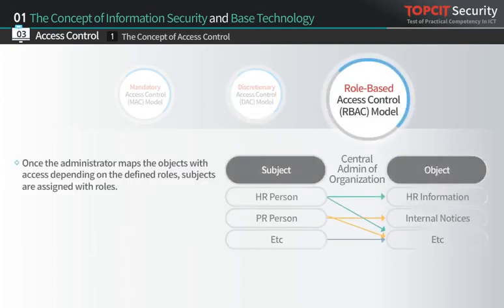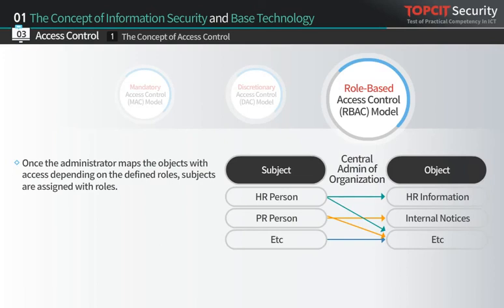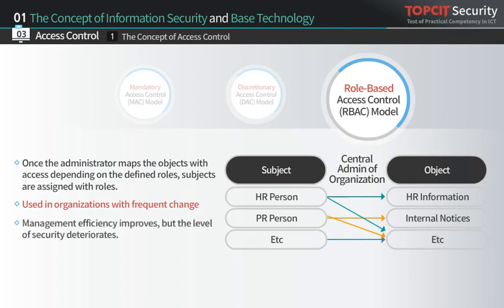The role-based access control model predefines roles, maps the objects that subjects can access depending on each role, and controls access by assigning roles to subjects. This model is used in organizations that go through frequent change. It may improve management efficiency but may lower the level of security.